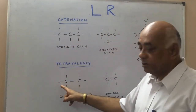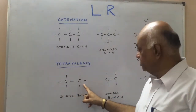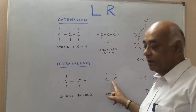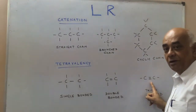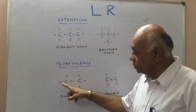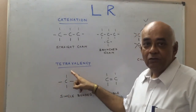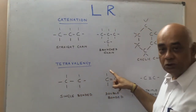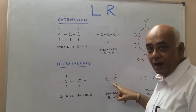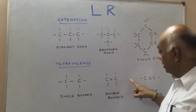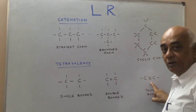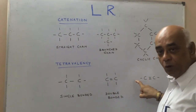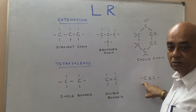Single bonded carbon is here. It's a double bond here, triple bond here. Tetravalency refers to each carbon having four bonds. This carbon has four bonds. This carbon has two single bonds and a double bond — totally four. And here you have triple bonded carbon with a triple bond and a single bond, totally four bonds.